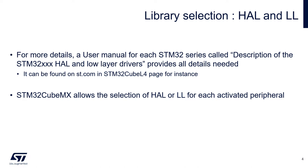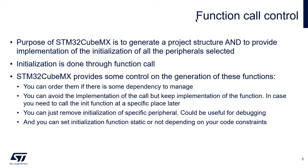Now after library selection, let's switch to function call control. The purpose of STM32CubeMX is to generate a project structure and to provide implementation of the initialization of all peripherals selected. This initialization is done through function calls as we could see before. Here are the controls we can have on the generation of these functions, and we will see in detail with CubeMX.